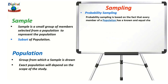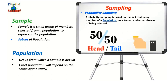Probability sampling is based on the fact that every member of the population has a known and equal chance of being selected. This method is based on the theory of probability. For example, when you flip a coin there is a 50/50 chance of getting a head or tail. If you flip a coin once more, again the chance is 50/50. Even if you flip a coin 100 times, the next time you flip it the chance of getting a head or tail will still be 50/50. The bottom line of the random selection process is equal probability and the independence of events.